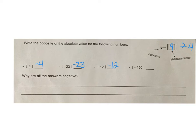The last one is the opposite of the absolute value of negative 450. The absolute value of negative 450 is positive 450. And the opposite of that is back to negative 450.